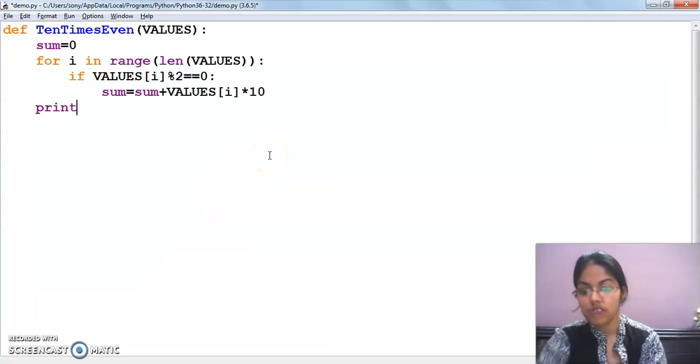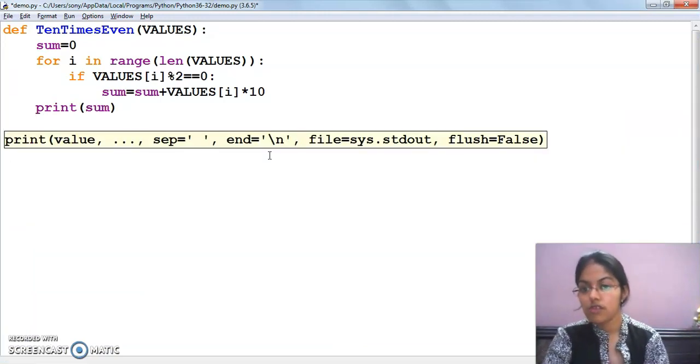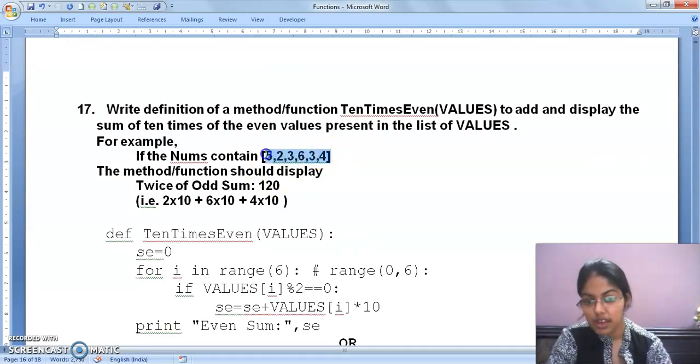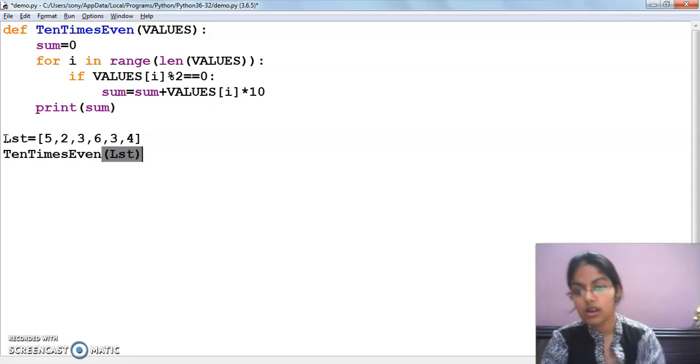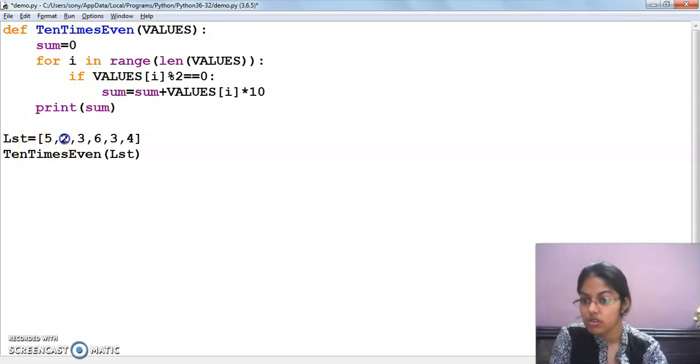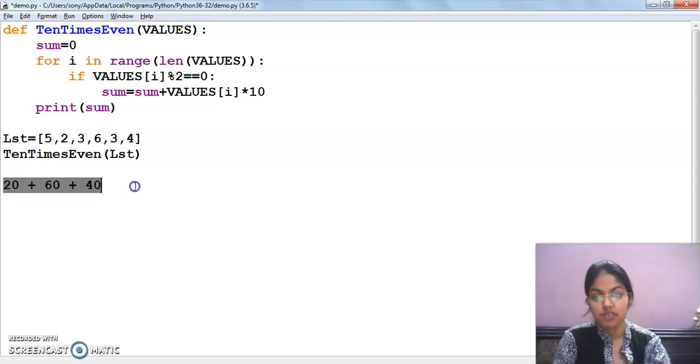Now what I have to do is sum equals to 0. We have to add even values. Now what I have to do is sum equals to sum plus list name VALUES of i. If we have to direct sum, in the last question we had to do twice double, multiply by 2. But what is this time? 10 times. So I will multiply by 10. Now I have to display, so I am going to write print sum. Now function call, VALUES is the list. After that I have to call the function TenTimesEven with the name of the list. Now see, even values are which ones? 2, we will multiply by 10 to get 20. This is your even number 6, 6 into 10 is 60, then plus this is your even number 4, 4 into 10 is 40.